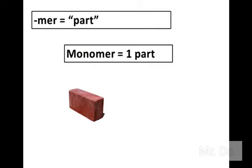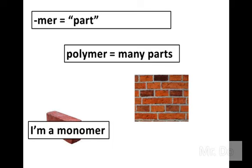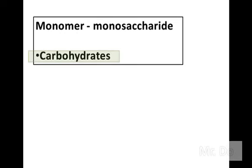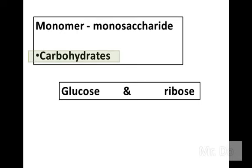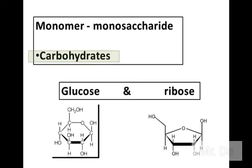It's like a wall of bricks. If you have the monomer version, then you have just one brick. But if you have many, many bricks put together to create a wall, that's the polymer version. So carbohydrate comes in two flavors: glucose and ribose. Those are the monomers — like one single brick.